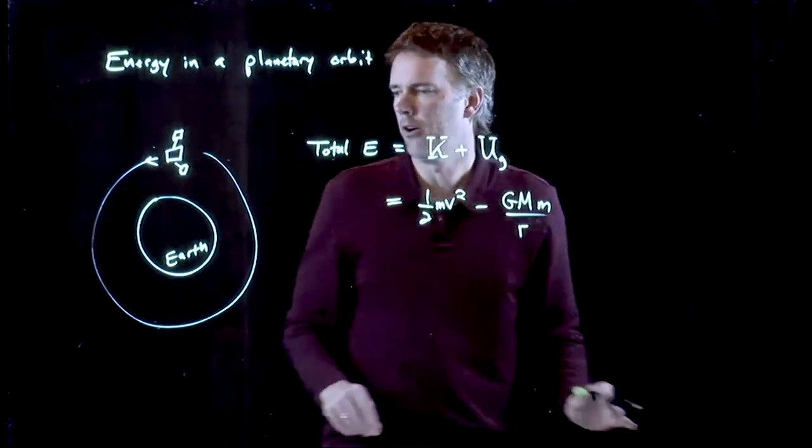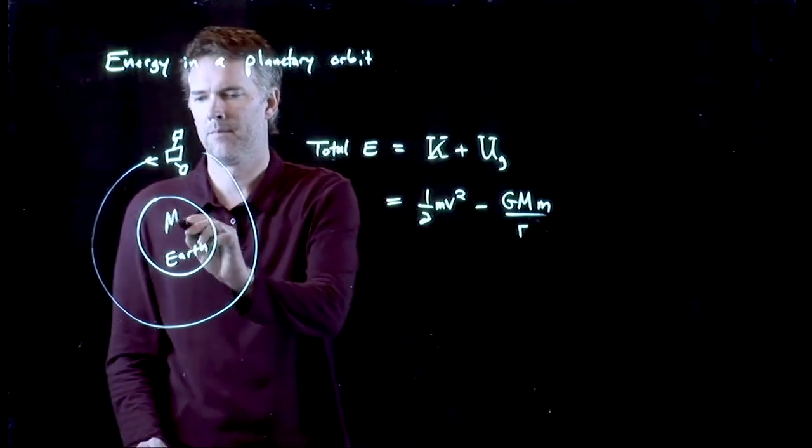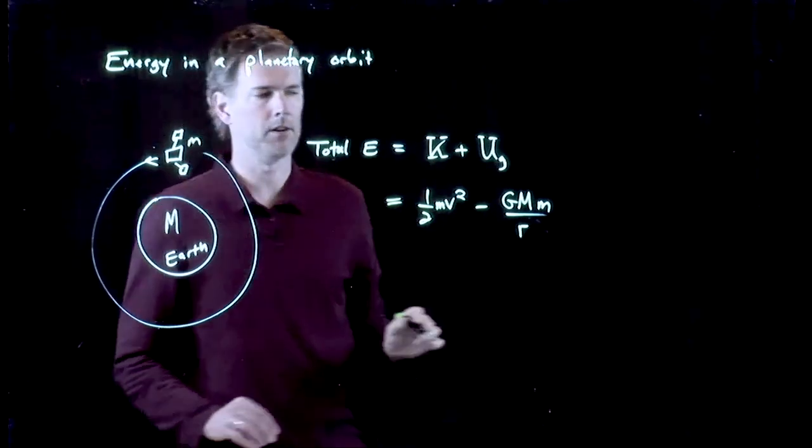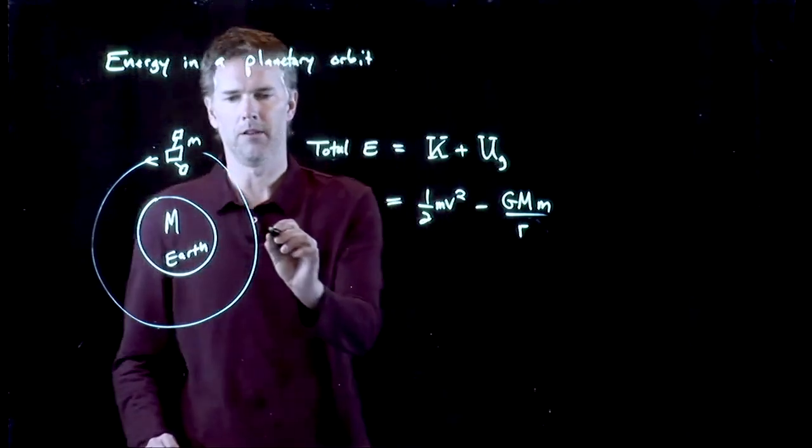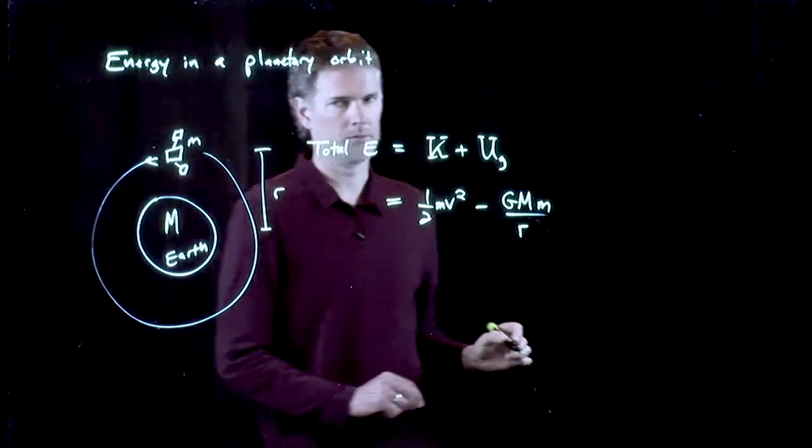Where the big M is the mass of the Earth. The little m is the mass of the satellite. And this distance there is, of course, r.